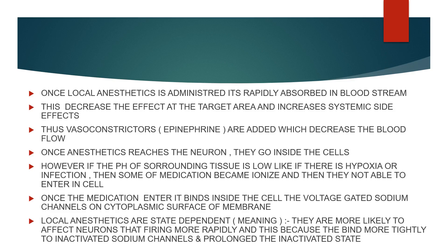Once the anesthetic reaches the neurons, it will go inside the cells. However, if the pH in the surrounding tissue is low — like if there's hypoxia or an infection — some of the medication will become ionized and won't be able to cross the cell membrane.